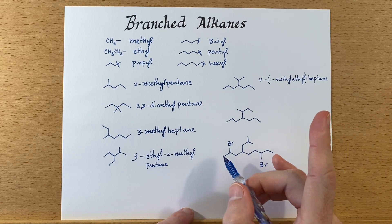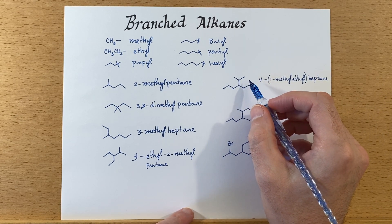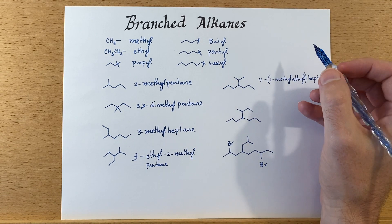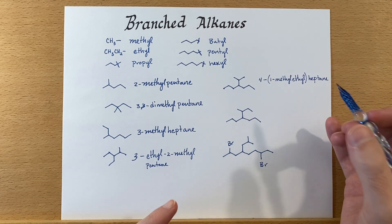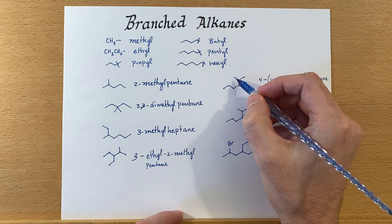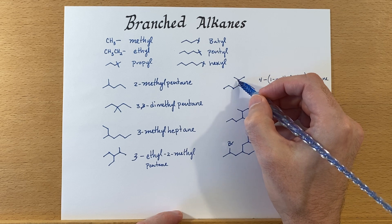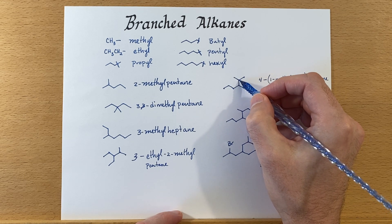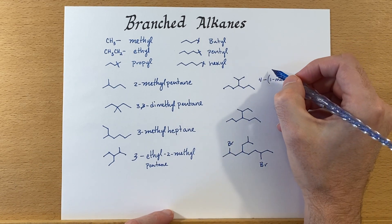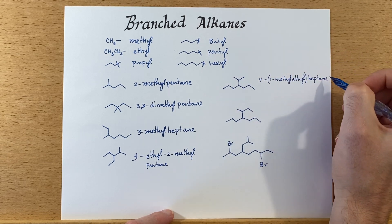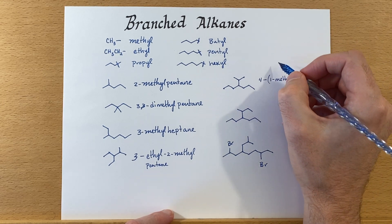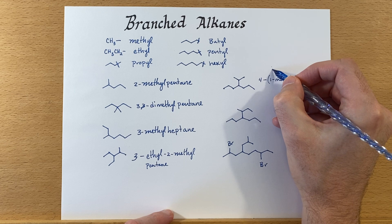There's another way to name this particular group using common nomenclature. This is called an isopropyl group because it's a three-carbon group coming off the middle carbon — 'iso' plus 'propyl' for three carbons. So sometimes people will just call this 4-isopropylheptane, which is a little shorter than writing 1-methylethyl.